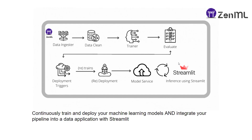In the pipeline, you have a data ingester which ingests the data from the source and then cleans it. Then we have a trainer which trains our model using the cleaned or processed data. After that, we evaluate the trained model. Then we have a deployment trigger — if the evaluation metric meets minimum accuracy requirements to go into production, it redeploys the model and the model is served as a service.